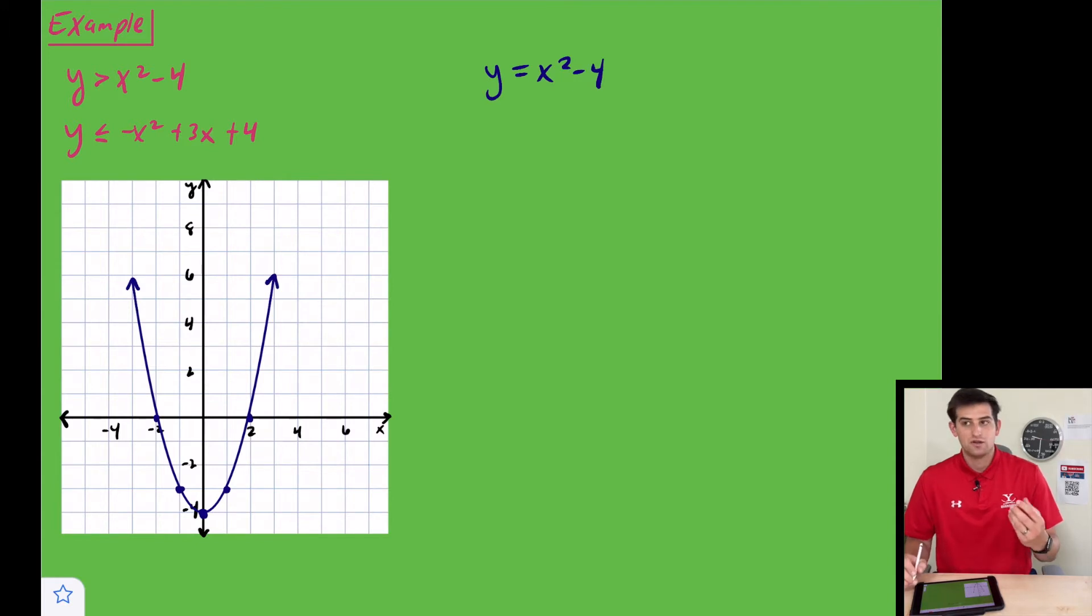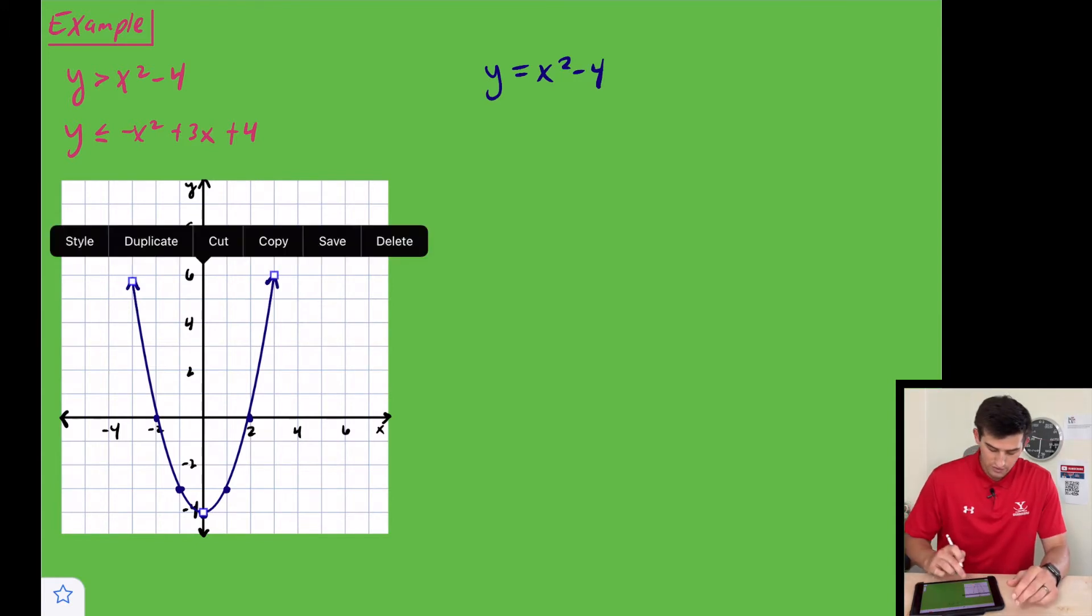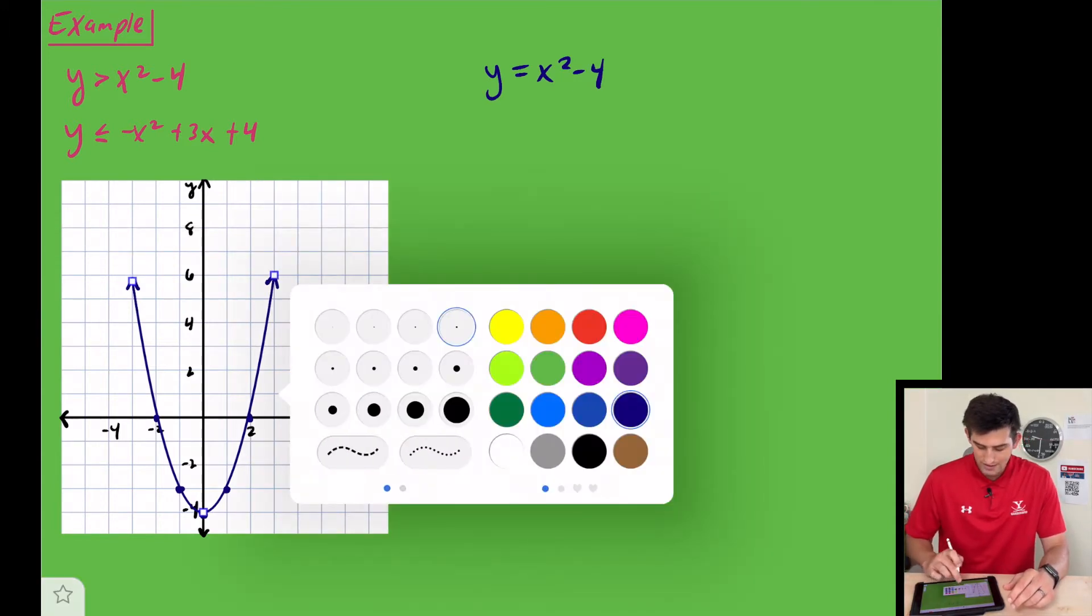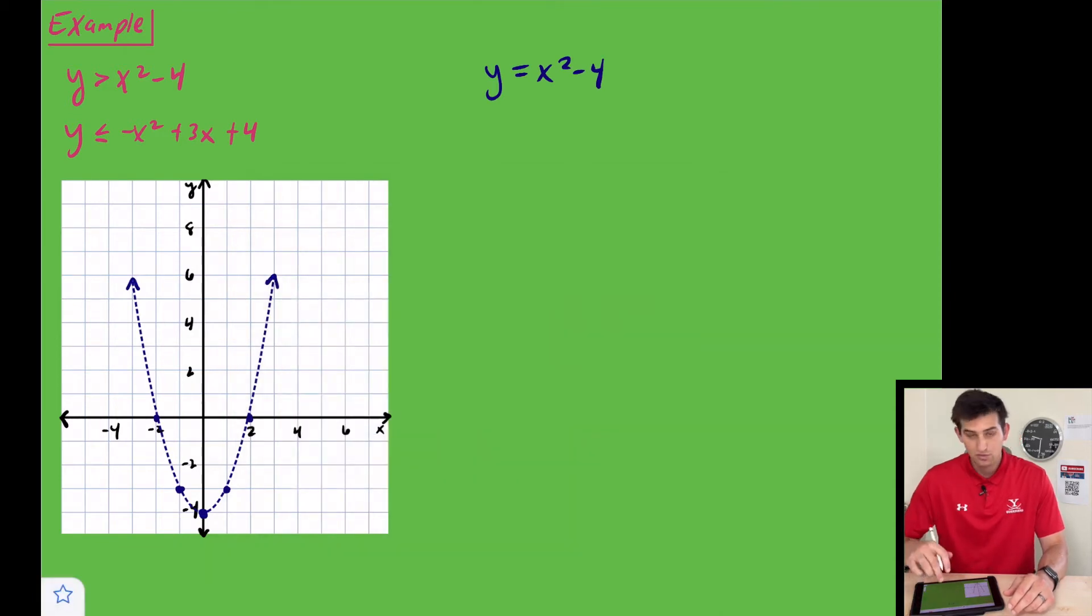We'll put some arrows on the end of that. Now we go back to our symbol—it was just a greater than—so we're going to change the style and make that be a dashed parabola because it's not or equal to.